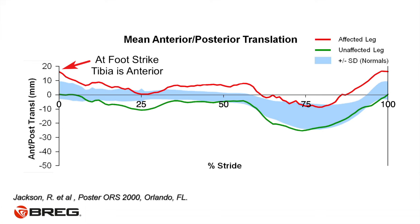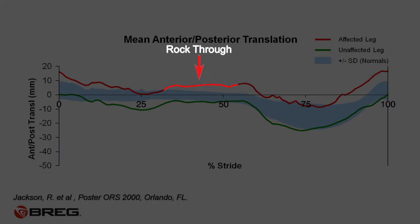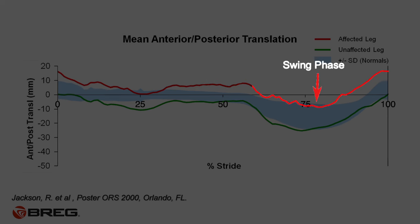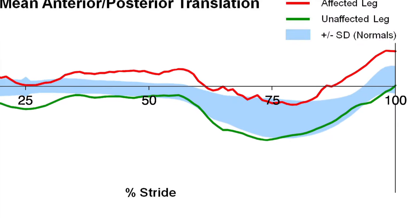The tibia is subluxed at foot strike. As we go through mid stance, rock through, toe off, and swing phase, we note that as we swing and extend toward the next foot strike, the tibia subluxes. Tom Andriaki, a well-known motion analysis expert, also demonstrated that the tibia was subluxed prior to foot strike in ACL-deficient knees, using a multi-camera motion analysis system. He published his results in the Journal of Biomechanics in 2005.